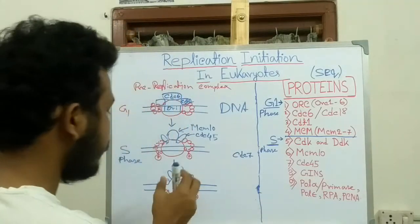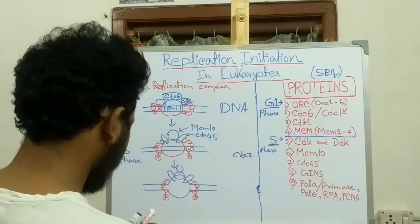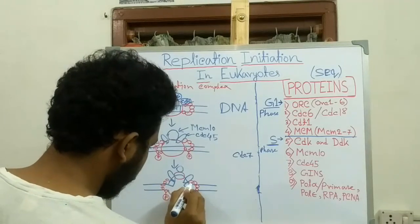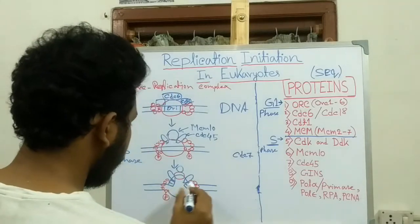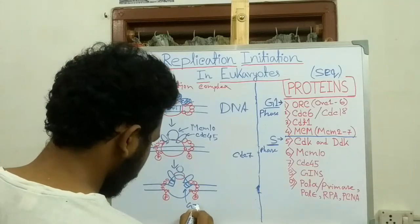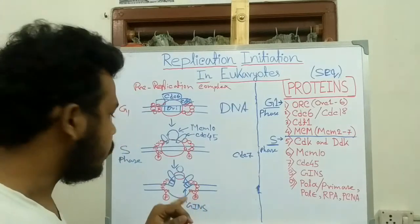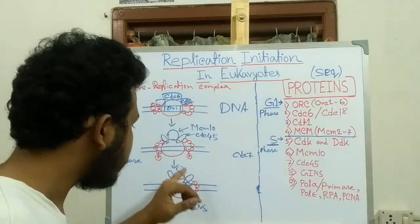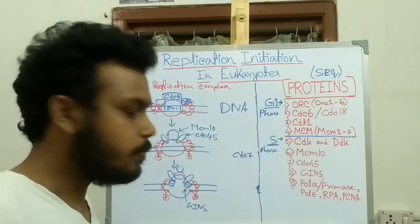GINS protein is recruited to the replication bubble. GINS protein is essential to connect the phosphorylated MCM complex and CDC45 during the initiation and elongation process.